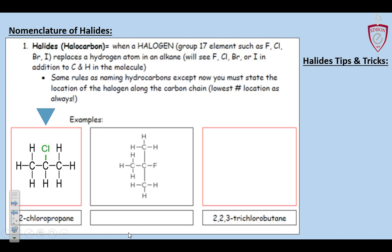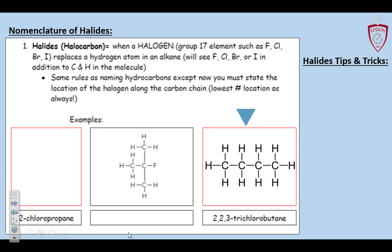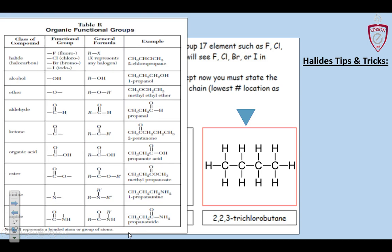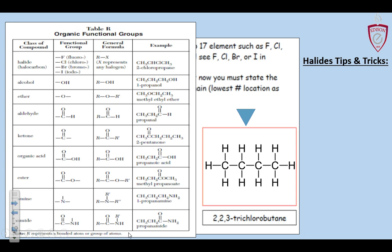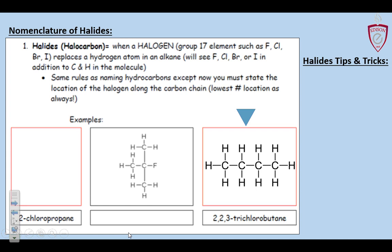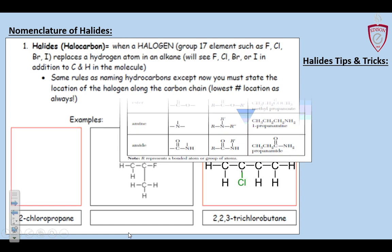We're going to go right to the one on the far right because it looks really similar, except a little more complicated: trichlorobutane. So we started with butane — four carbons — and now we've got to put three chlorines in there, for 'tri.' Chloro, three Cl's. It looks like one on the two, one on the two, and one on the three. So the second carbon gets two chlorines and the third carbon gets one. See how the map works?